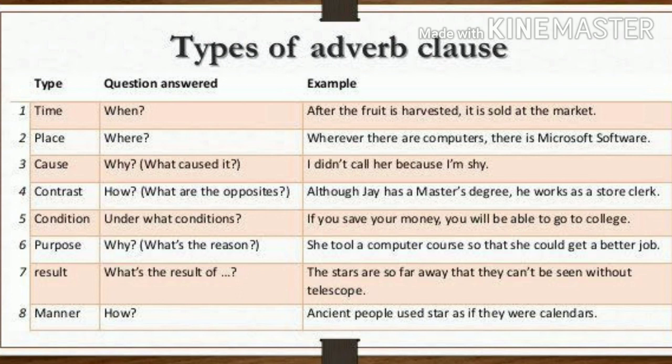6. Adverb of purpose — Why? 'She took a computer course so that she could get a better job.' 7. Adverb of result — What's the result? 'The stars are so far away that they cannot be seen without a telescope.' 8. Adverb of manner — How? 'Ancient people used stars as if they were calendars.'